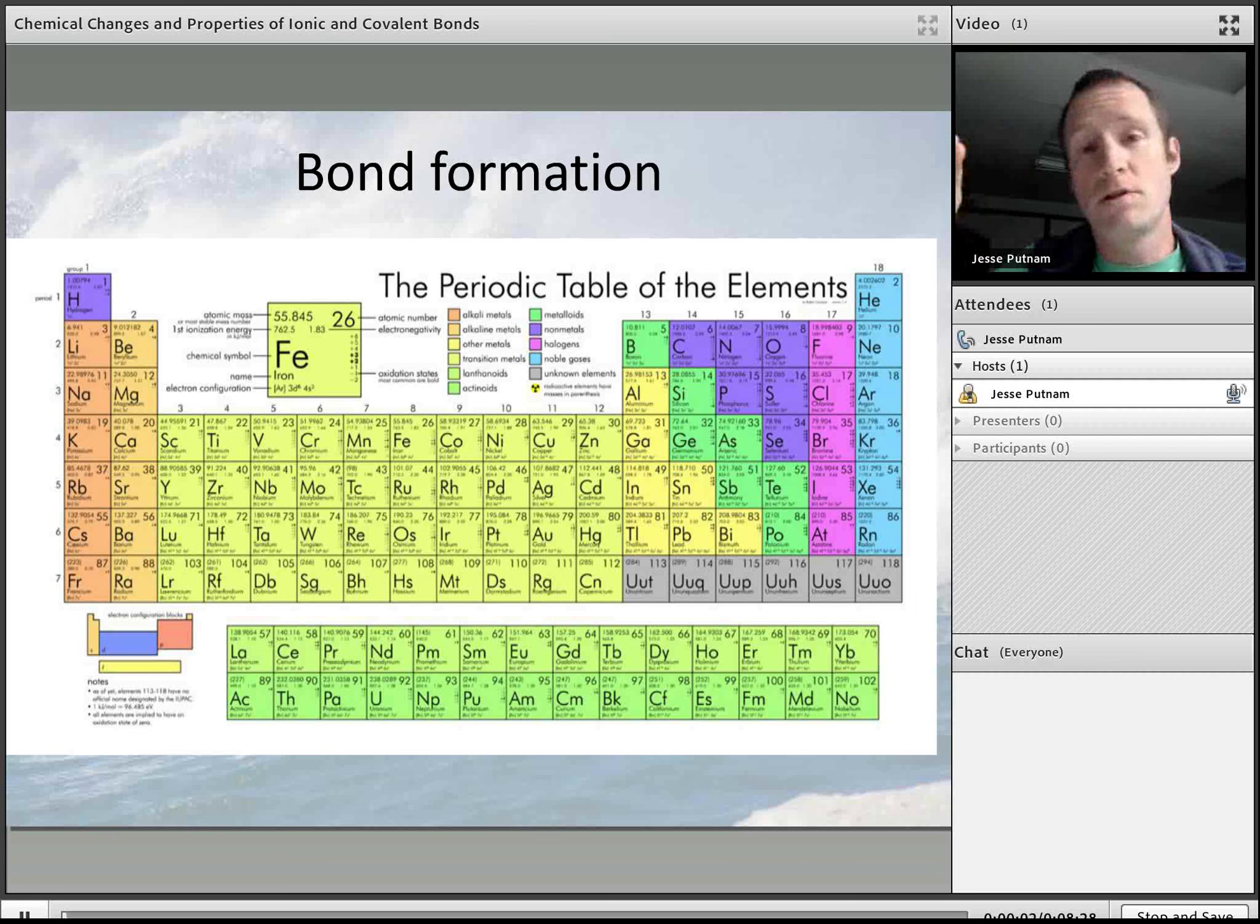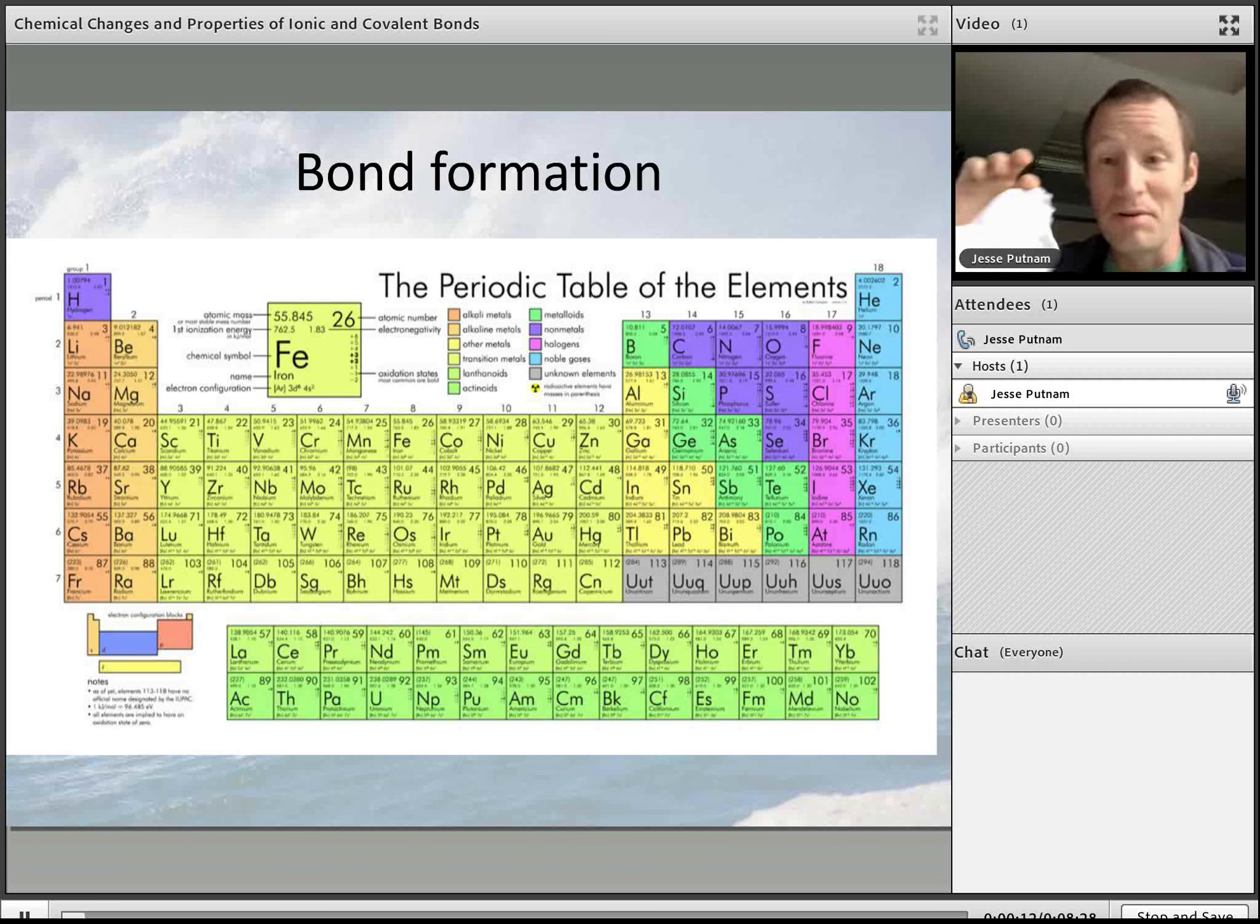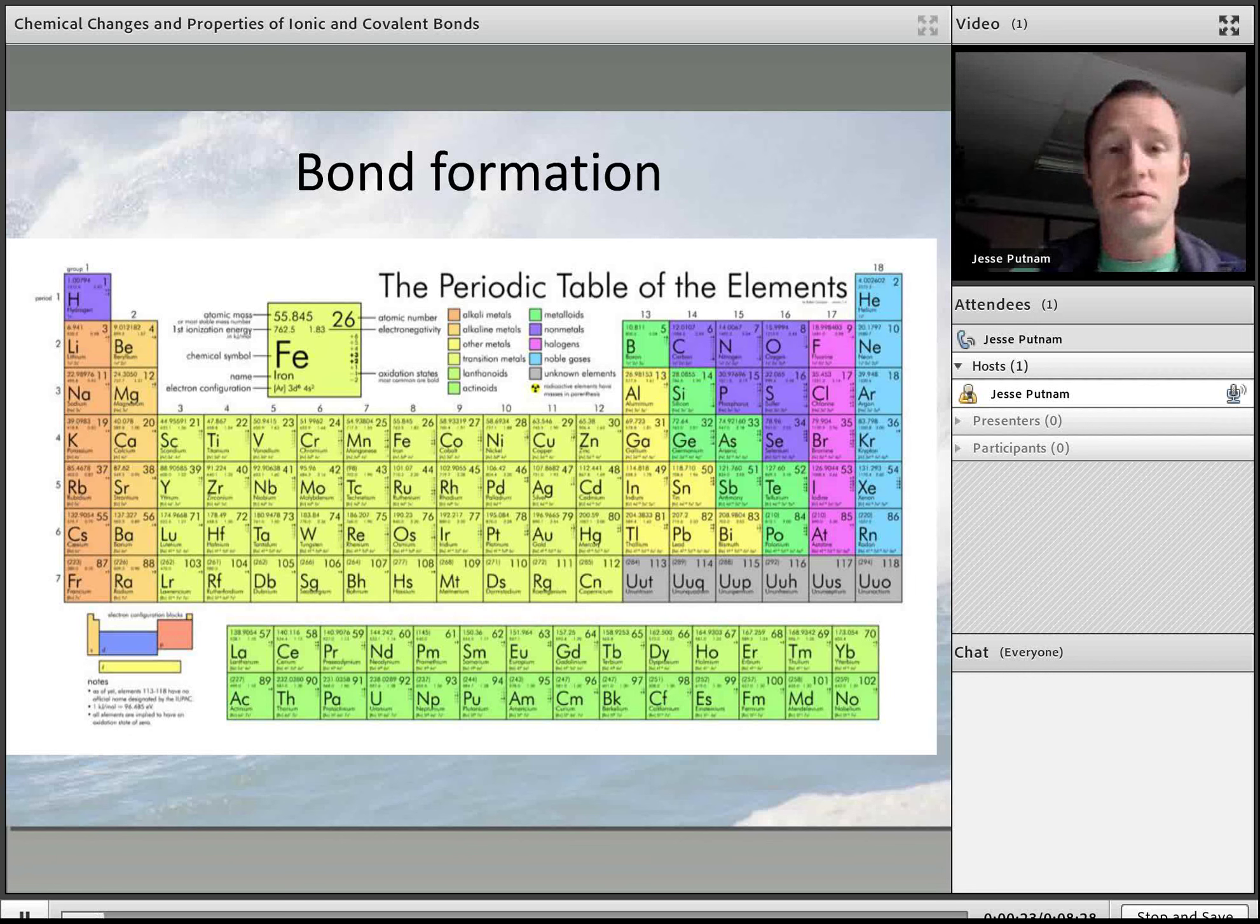We'll explore the properties of ionic and covalent substances and how to differentiate between them. Looking at the world around us, is this piece of plastic ionically or covalently bonded, and how might I predict that? But before we do, I want to remind us how ionic and covalent substances are formed.